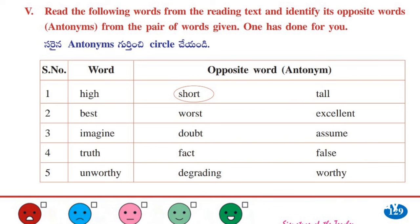Let's see the roman number five. Here we have to read the following words from the reading text and identify its opposite words — means antonym. Some words are given. We have to underline or circle the opposite words of the given word. One is done for us: high — opposite is short. Next: best — opposite is worst. Next: imagine — opposite is assume. Next: truth — opposite is false. Next: unworthy — opposite is worthy.